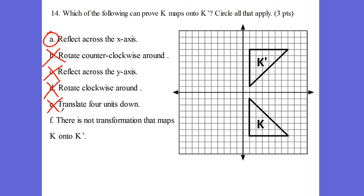There is not a transformation that maps k onto k prime other than the one we found. Good joke — you got me right there. So my answer right here is going to be only reflecting across the x-axis. Yes, okay, very good.